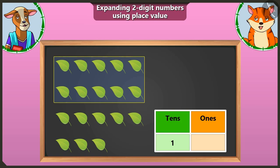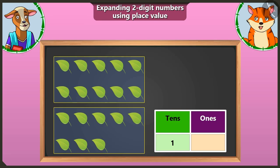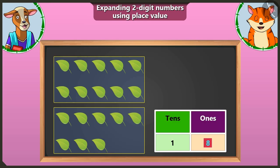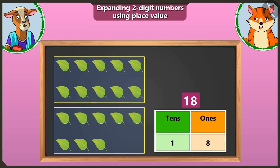Well done, Lily. Now I will count the remaining leaves. One, two, three, four, five, six, seven and eight. We will write the number eight in the ones box. Now, tell me — one tens and eight ones make which number? One tens and eight ones make number eighteen. Well done, Billy.